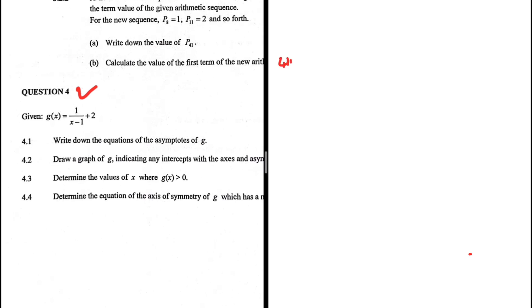First equation 4.1, write down the equations of the asymptotes of g, g of x. So we have g of x being equals to 1 divided by x minus 1 plus 2. So in order to find our asymptotes, let's start with the vertical asymptote. So vertical asymptote, we need to equate this denominator to 0 because we cannot divide by 0. So that value of x will be our asymptote. So x minus 1 is equals to 0. x is equals to 1. That is our vertical asymptote.